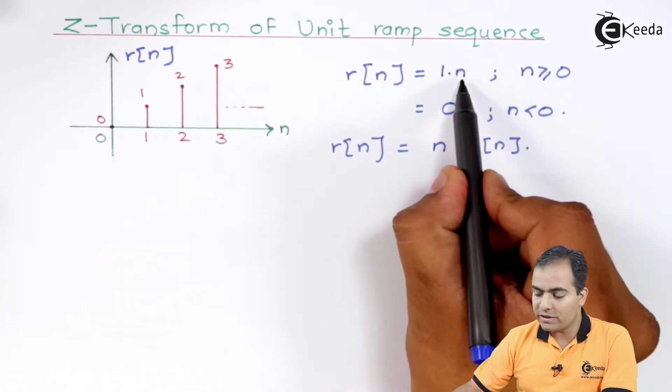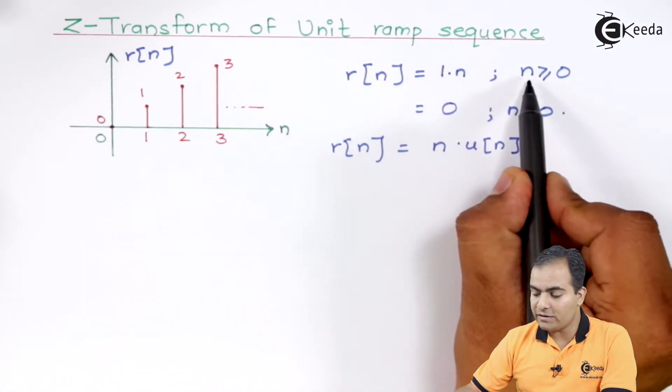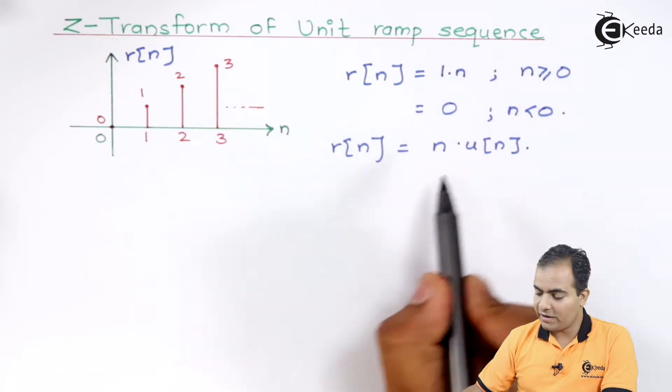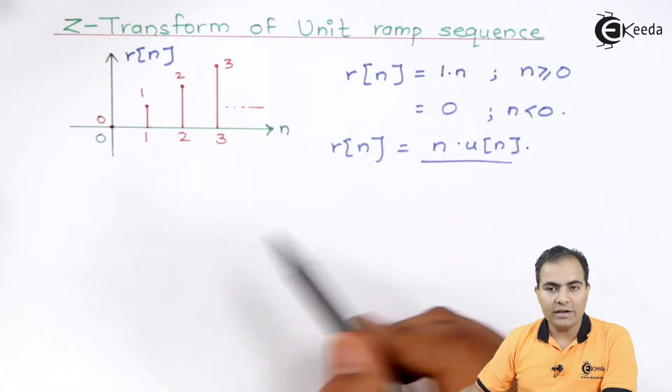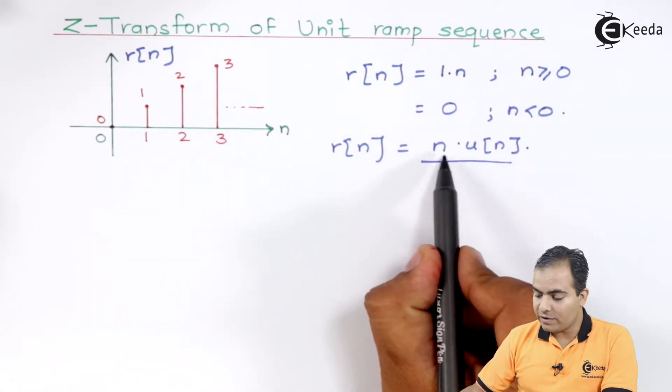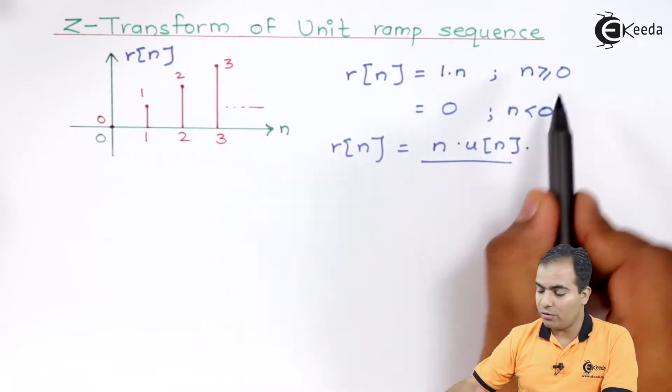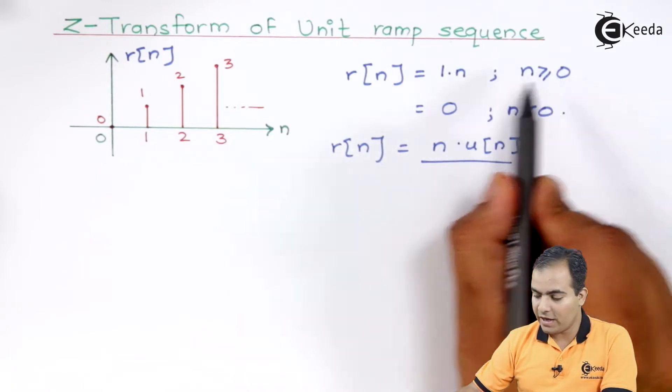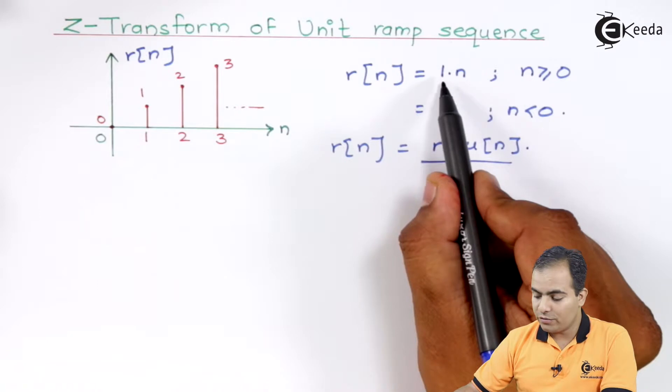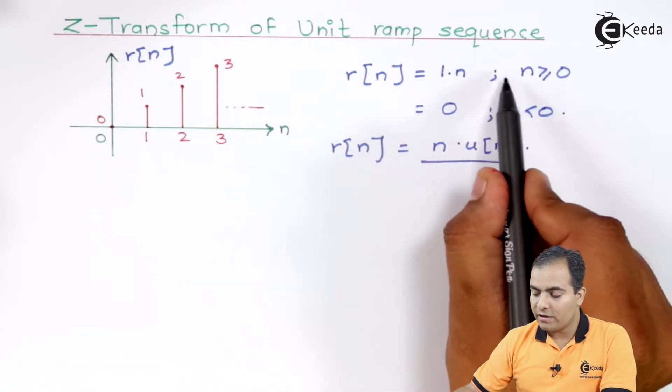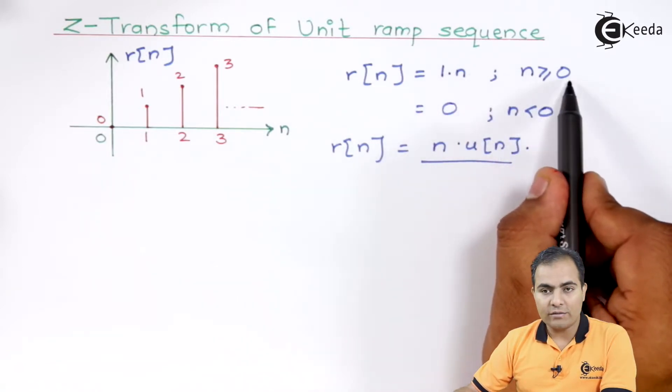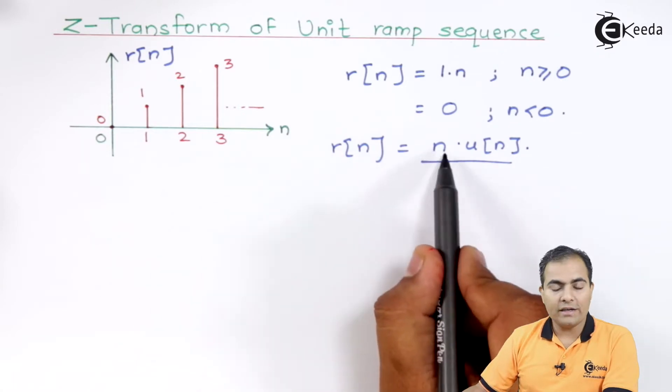The reason is we can use n value and the limit is n is greater than equal to 0, and it is nothing but basically n into u of n because u of n is available only in this region and having amplitude 1. So we can write R of n by n when it is greater than equal to 0, or else you can write n into u of n.